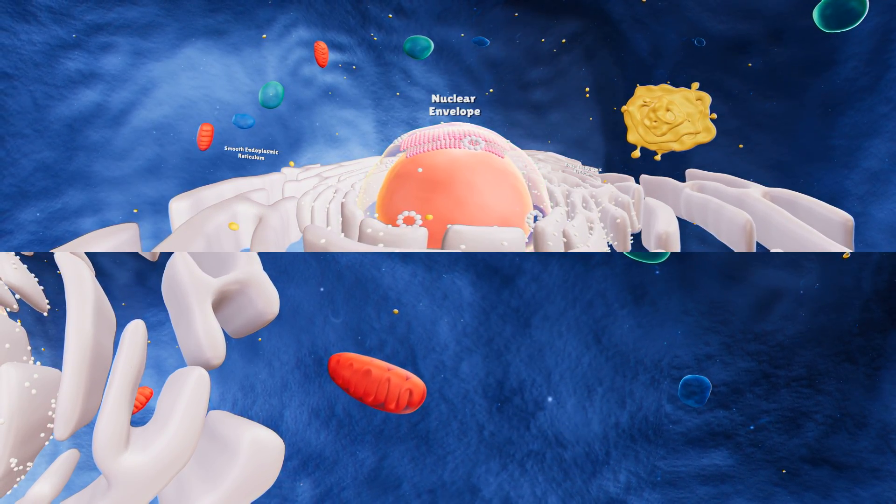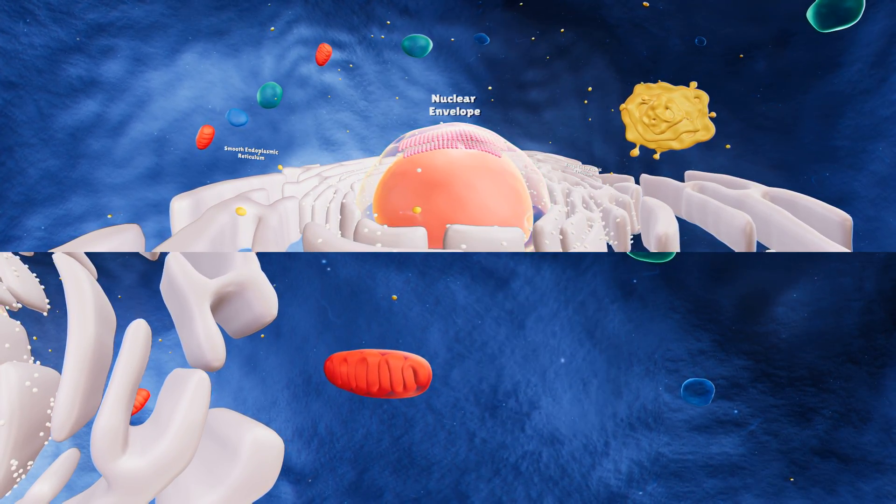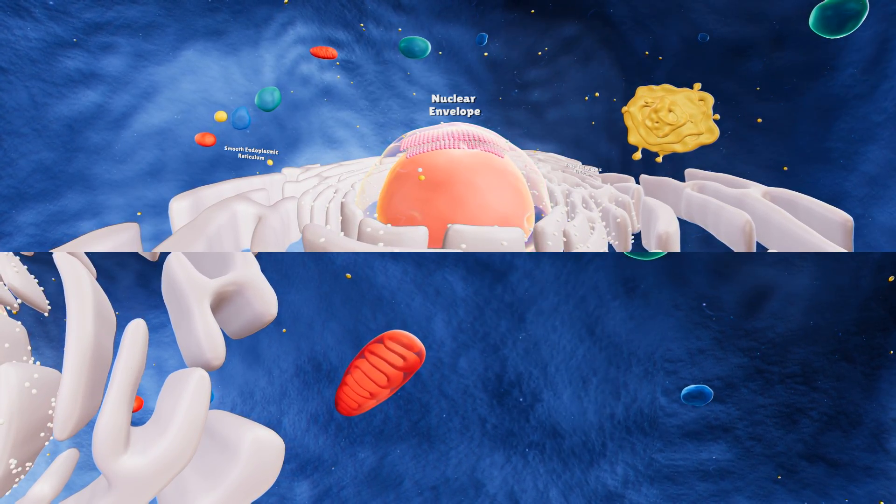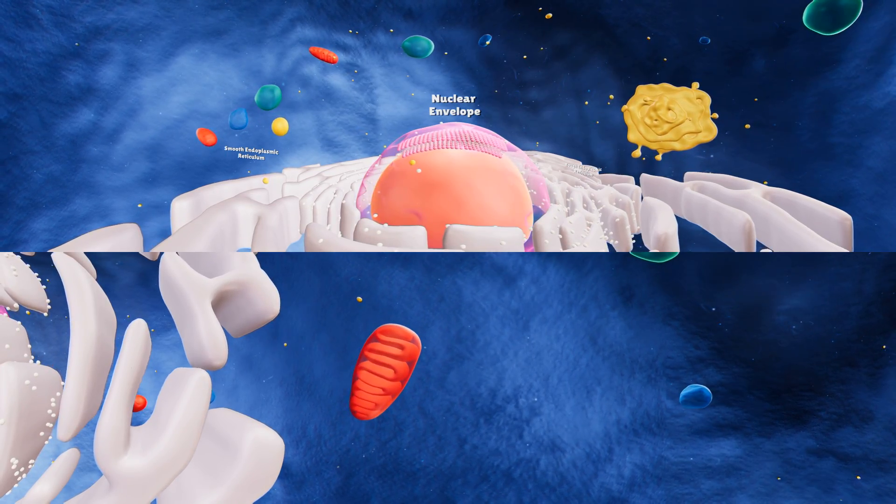The entire nucleus is covered by the nuclear envelope. The nuclear envelope is a two-layered membrane. It has an outer and an inner membrane.